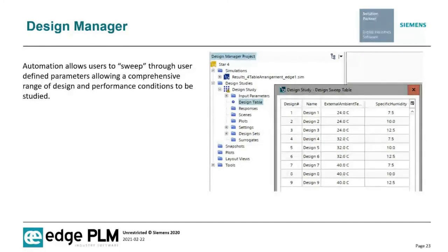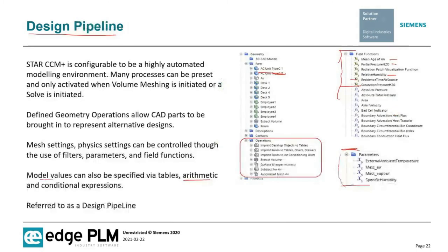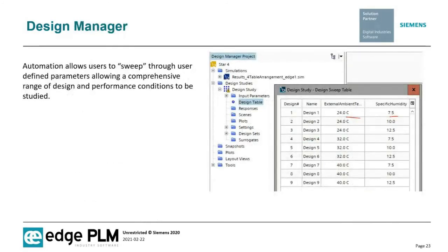Once you understand the design pipeline, the next step is the Design Manager, which allows you to sweep through a range of specified parameters. For example, parameters for specific humidity and external air temperature can be set up to run nine different simulations sweeping through different parameter settings. Tools within Star CCM then allow you to collate the outcomes of those different design studies.